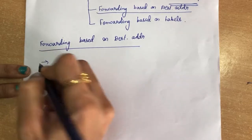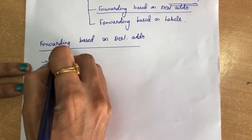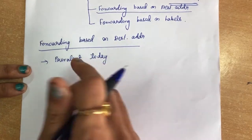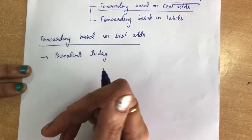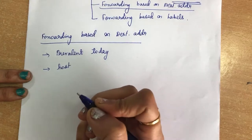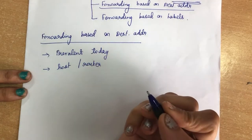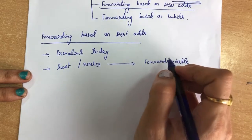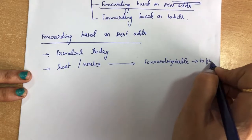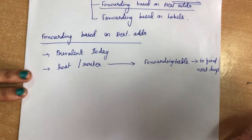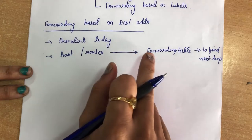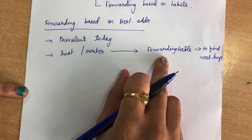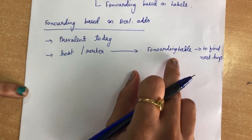Forwarding based on destination address is the most prevalent approach used today — it is the traditional approach. Whenever a host has a packet to send, or whenever a router has received a packet, it will check the forwarding table and find the next hop to which the packet should be delivered. Based on the forwarding table, it routes the packet to the next hop. We will now see how IP protocol is used in this forwarding table.